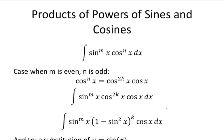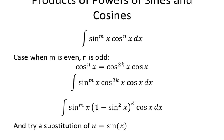Here's another case: when m is even and n is odd, you can do a different type of substitution. The cosine to the odd power gets written as cosine to the 2k plus 1, putting cosine to the first out front, and cosine to the 2k becomes 1 minus sine squared to the k power. The sine to the m remains as is, and we do a substitution of u equals sine of x.